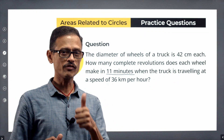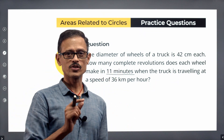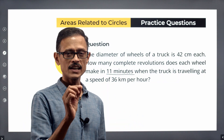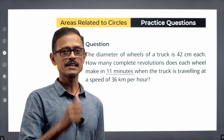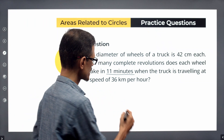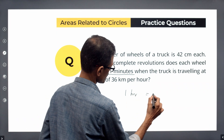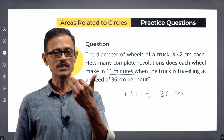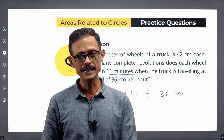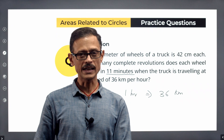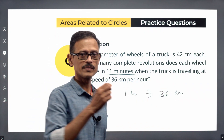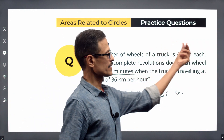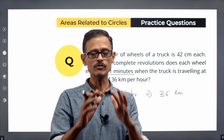Let's decode this. We need to find out the number of revolutions made by each wheel, for a duration of 11 minutes. We have two pieces of data: the truck is traveling at a speed of 36 kilometers per hour, meaning it covers 36 kilometers each hour. The second piece of information is that the diameter of each wheel is equal to 42 centimeters.